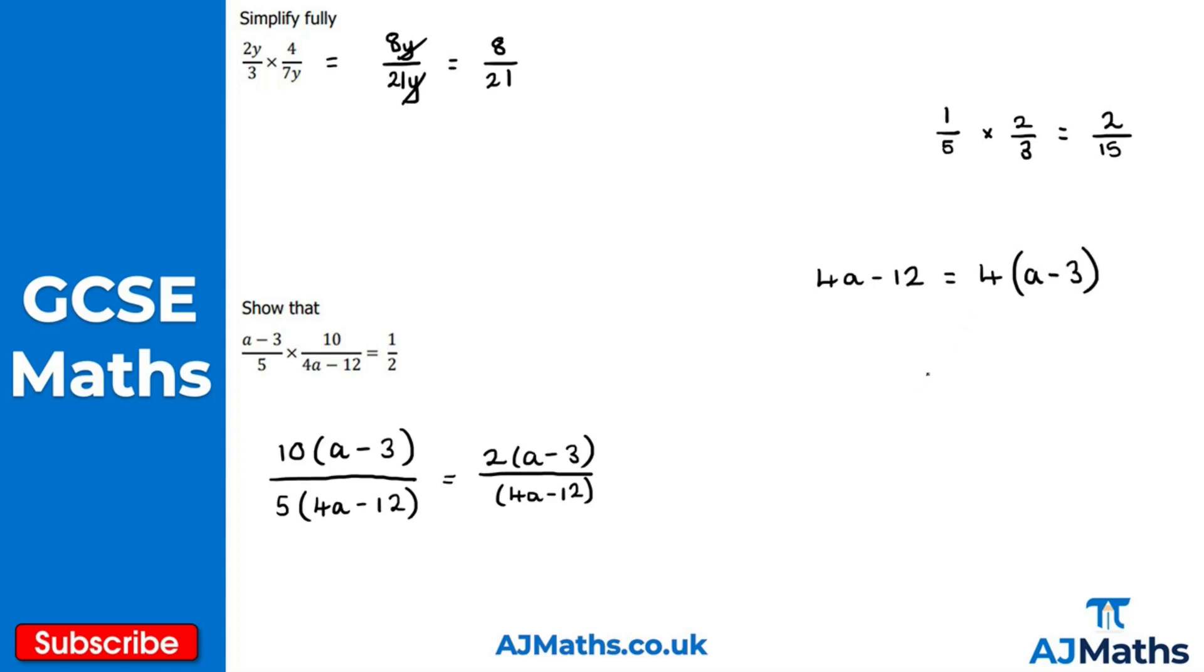Notice we now have a common factor in the numerator and denominator: 2(a-3) over 4(a-3). We factorized the denominator to find this common factor. Cancel the (a-3) terms, leaving 2/4, which simplifies to 1/2 by dividing top and bottom by 2, as required.